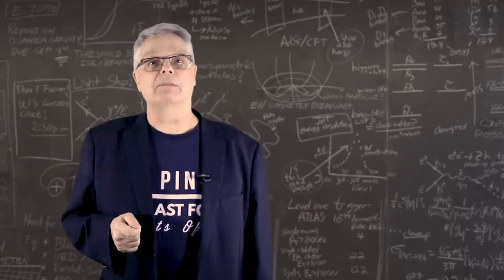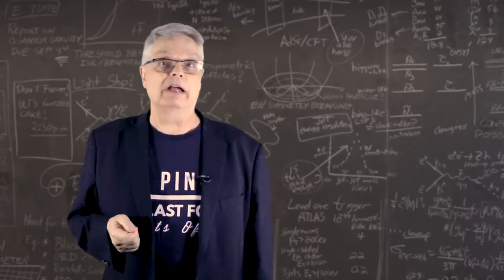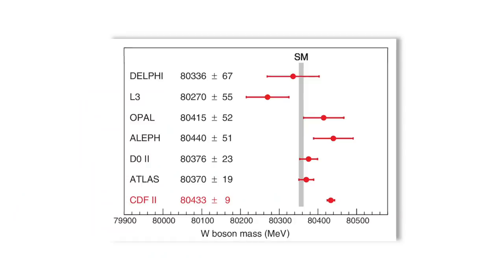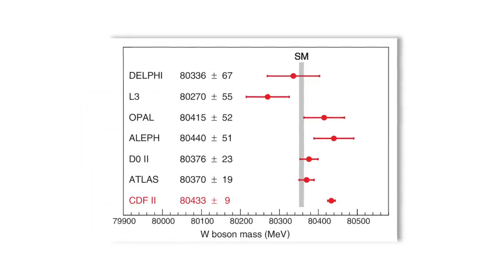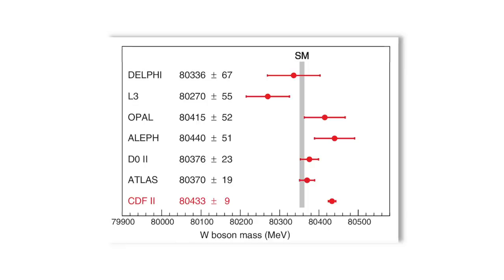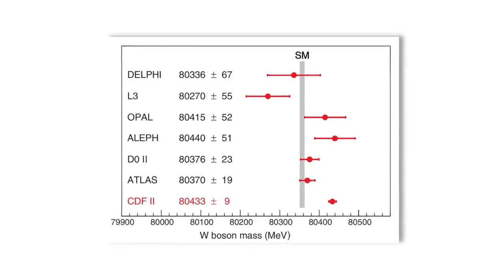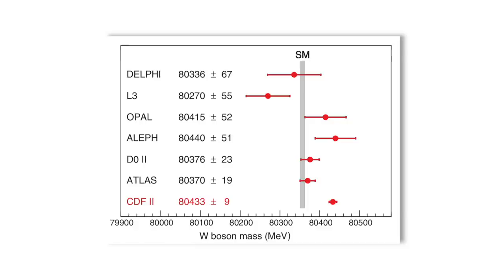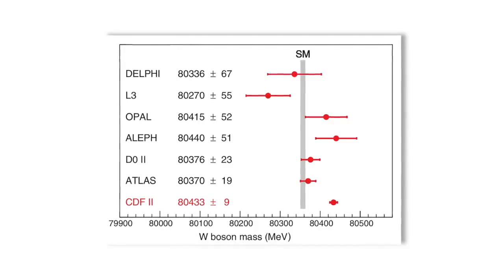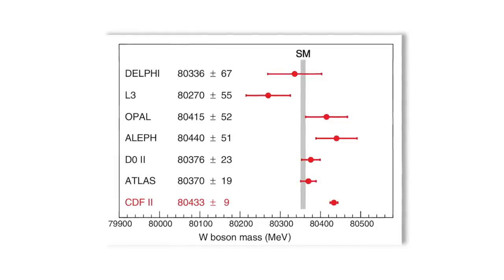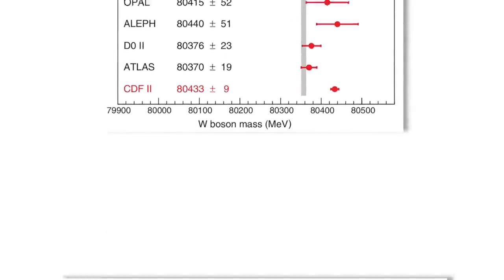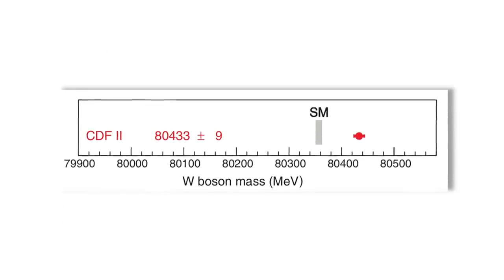So, given that the CDF W boson mass measurement is here and will be around for a few years, let's take a quick look at it and what it might mean. The plot you see here shows the situation. The top four measurements are from the LEP experiments. Then there is the 2012 D0 measurement and the 2016 ATLAS measurement and the new CDF measurement. The length of the red bar shows you the uncertainty. The gray bar is the prediction of the standard model that arises from combining precision measurements of other variables. And what you see is that the CDF measurement seriously disagrees with theory.